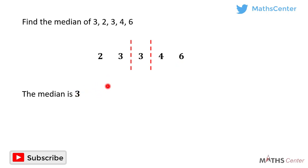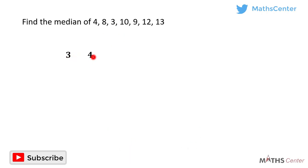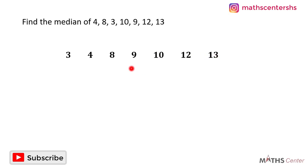Let's consider another question. Find the median of 4, 8, 3, 10, 9, 12, 13. I'll arrange the numbers in ascending order — from the least to the greatest: 3, 4, 8, 9, 10, 12, 13. There are seven numbers in total. When we divide them into two, we have three to the left and three to the right. The number in the middle is 9, so the median is 9.